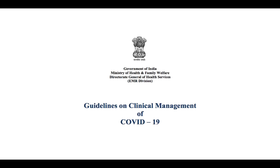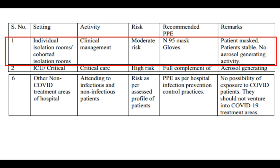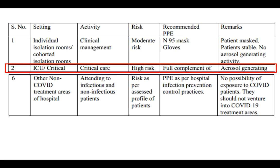What are the guidelines given by the Government of India? For patients in isolation rooms, an N95 mask and gloves are needed, assuming no aerosol-generating activity like bronchoscopy or intubation. In the ICU and critical care, it's a high-risk zone and a full complement of PPE is required — N95 mask, gloves, gown, and eye protection — for critical care physicians and nurses.